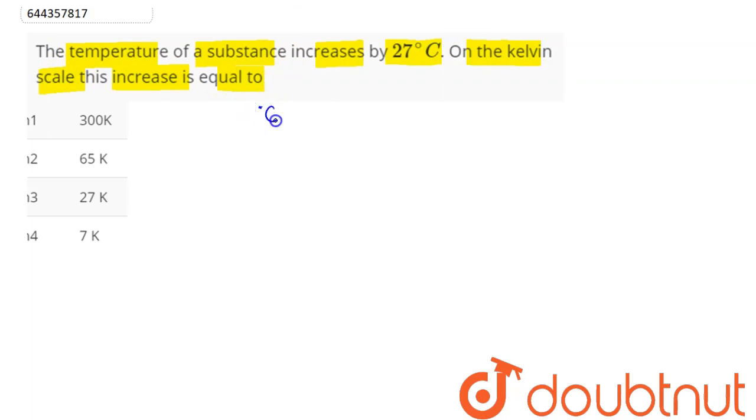Here we know, degree Celsius minus lower fixed point divided by upper fixed point minus lower fixed point is a constant, which here is equal to degree Celsius minus 0 degree Celsius divided by 100 minus 0 degree Celsius.